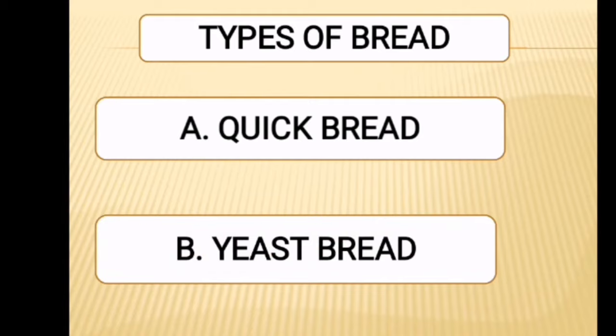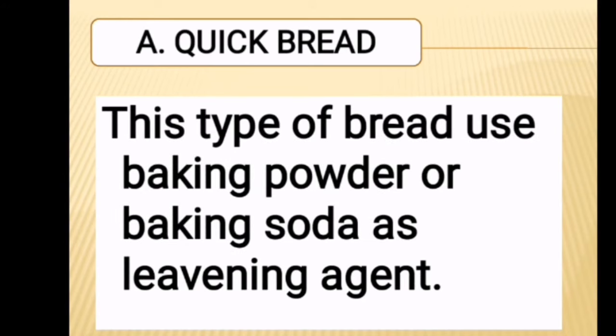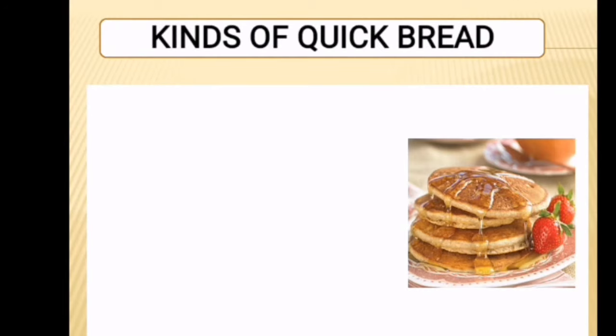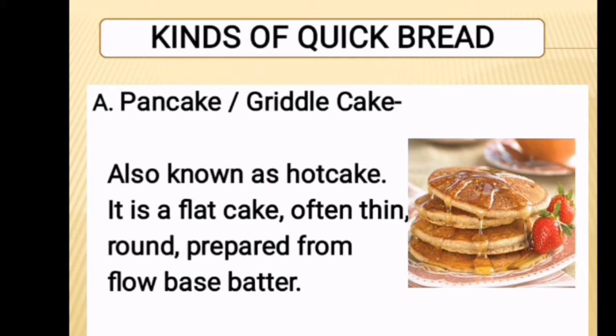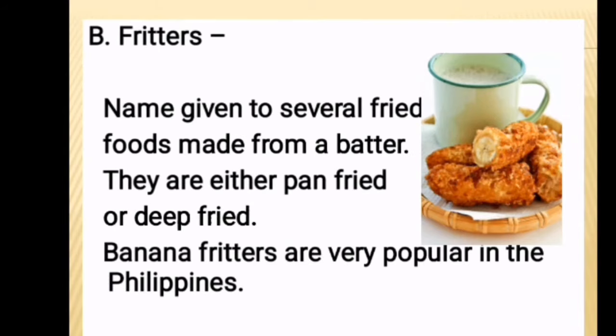The types of bread: Quick Bread and Yeast Bread. Quick bread uses baking powder or baking soda as a leavening agent. Kinds of Quick Bread: Pancake or Griddle Cake — also known as Hot Cake. It is a flat cake, often thin and round, prepared from flour-based batter. Fritters: The name fritters is given to several fried foods made from a batter. They are either pan-fried or deep-fried.